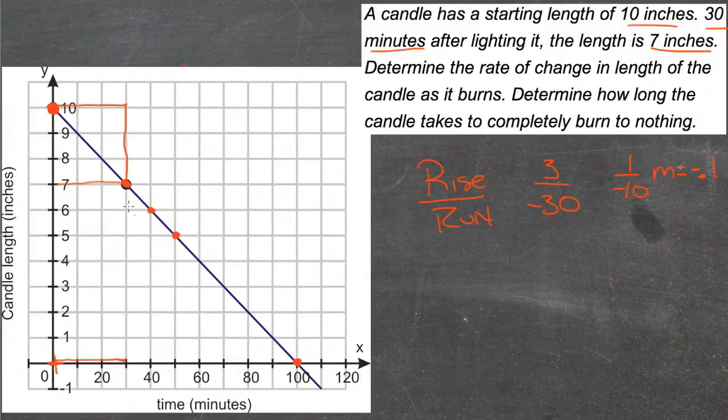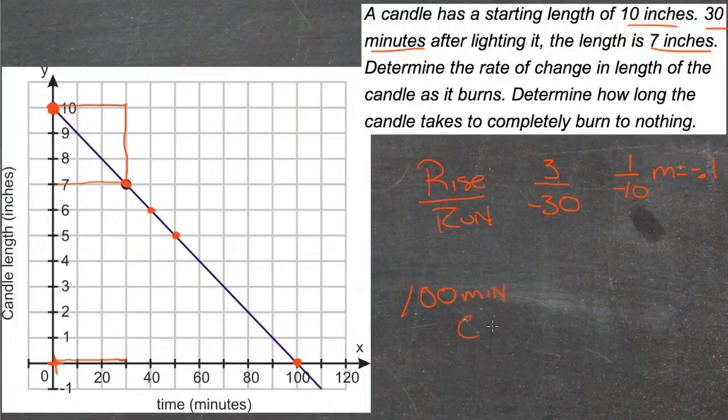In order for the length of the candle to be 0, it has to burn, according to our graph, for 100 minutes. So after 100 minutes, the candle is gone.